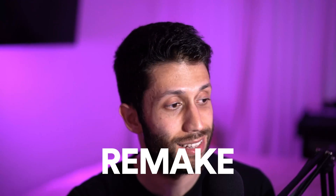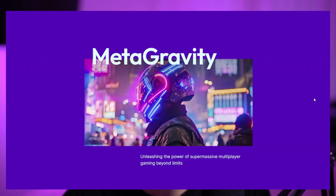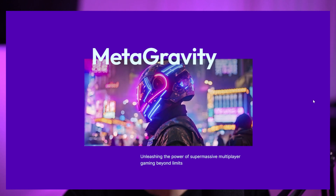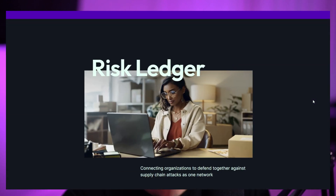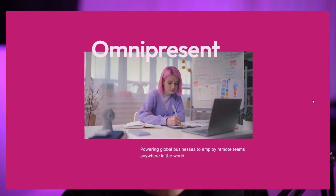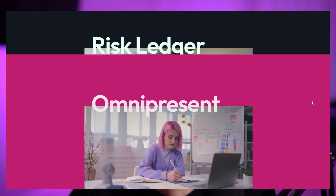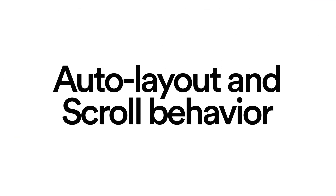In this video, I'm going to remake this section of the Max Martinez website in Figma, where you can see that we have this scroll effect. Whenever I scroll down or scroll up, the sections are going to scroll over each other. If you watch this video, you're going to learn how to use the auto layout and the properties in the prototyping section in order to make such an effect.